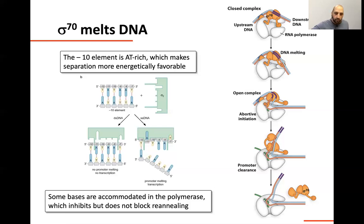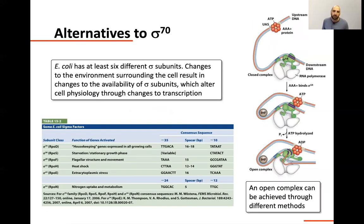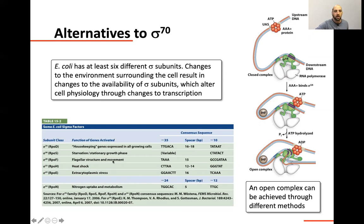I want to briefly discuss the alternatives to sigma 70. E. coli — our workhorse bacterium in molecular biology — has six different sigma subunits: sigma 70, 38, 28, 54, and 34. The important thing is not to memorize all of these sigma factors. What I want to highlight is that there are different sigma factors, and that they separate the strands in different ways. They all have the same job of recruiting polymerase to a particular place and separating strands, but they don't all use the same mechanism.